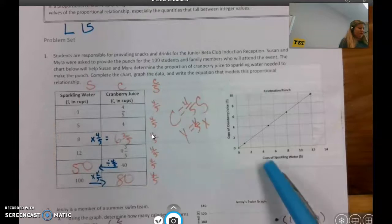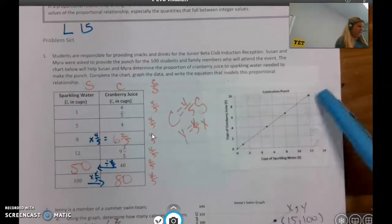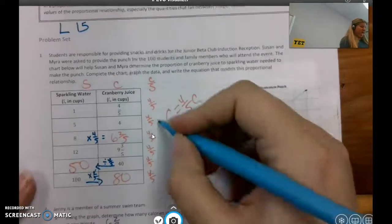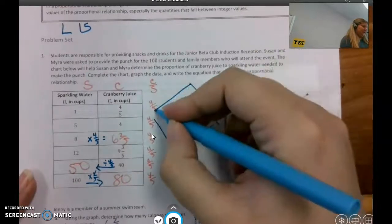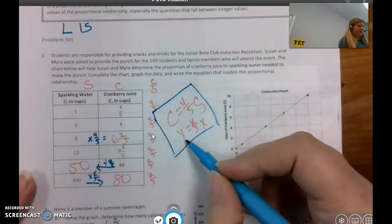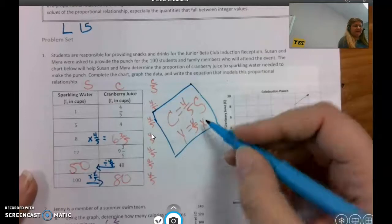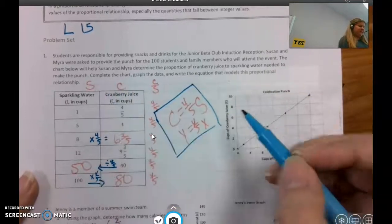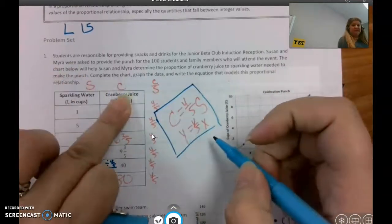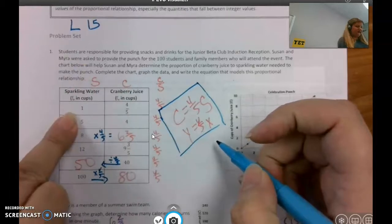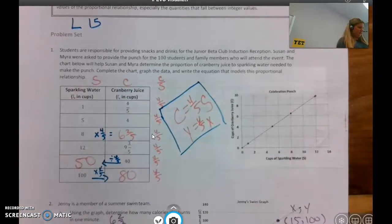And again, 100 times 4/5 gave me 80, and then I graphed these on a graph. I went ahead and wrote my equations, so I wrote one with y equals 4/5 x, and the other I used my C and S, so C to get to C you take S times 4/5, and that was number one.